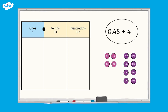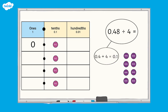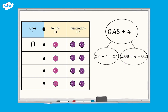How did you get on? Let's check how we can use a place value chart and part-whole model to find the answer to 0.48 divided by 4. Firstly, we have no ones in 0.48, so there are no ones counters to divide equally into groups. When we divide the four tenths into four equal groups, we have one tenth in each group, and when the eight hundredths are divided into four equal groups, we have two hundredths in each group. So the final answer is 0.12.